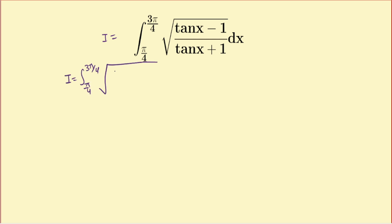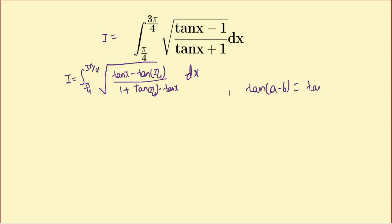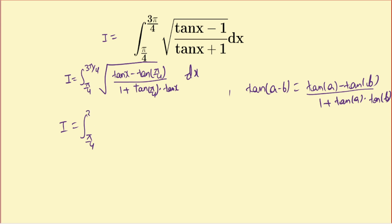I'm going to rewrite this as tan(x − π/4) in the numerator and 1 + tan(π/4)·tan x in the denominator. You know the formula tan(a − b) = (tan a − tan b)/(1 + tan a·tan b). Using it, our integral becomes I = ∫ from π/4 to 3π/4 of √(tan(x − π/4)) dx.